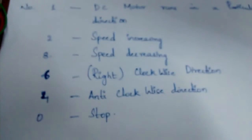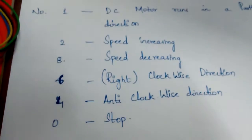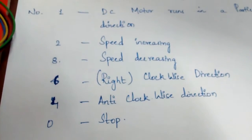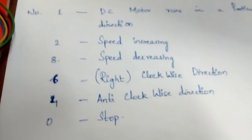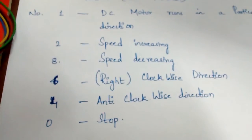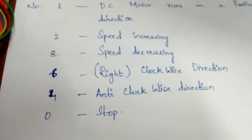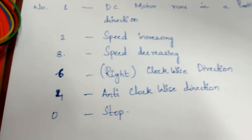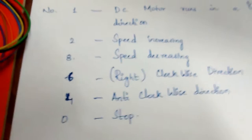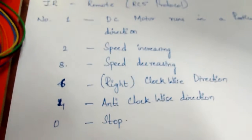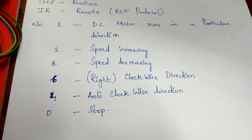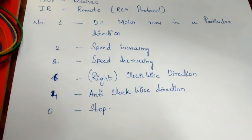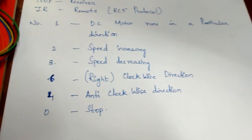In my code I assign the values: 2 for speed increasing, 8 for speed decreasing, 6 for clockwise direction, 4 for anti-clockwise direction, 0 to stop, and 1 for the DC motor to run in a particular direction and pattern — pressing 6 for the clockwise direction will turn it on and off.